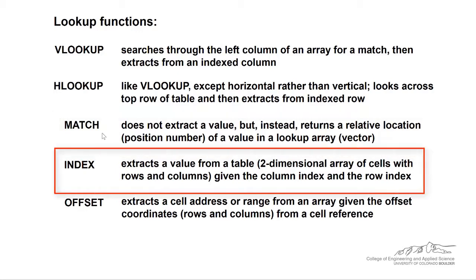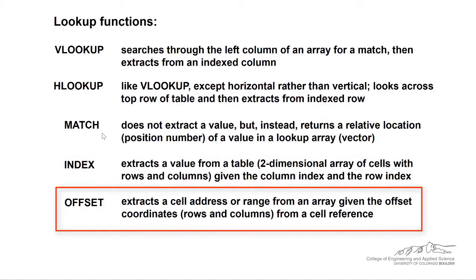Index, given an array and given the row number and column number, you can extract that row and column element from that array. The offset function will start with a base cell, and then it offsets a certain number of rows and columns, and then you can either output a single cell or a range.